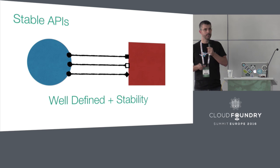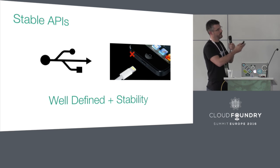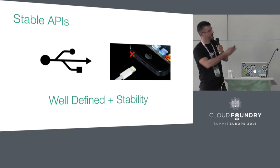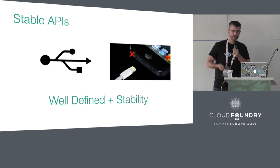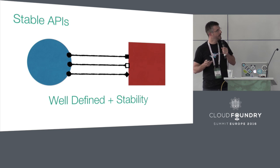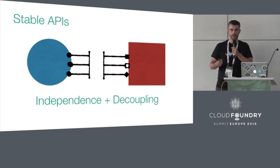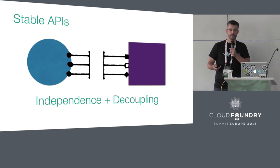Distributed systems also need stable APIs — well-defined APIs that are stable. An example of a good stable API is effectively like a USB; it's been around for ages. A bad API would be like the new iPhone headphone jack, which means you have to update your earphones and everything else. Stable APIs give each component the ability to be independent and decoupled, and that's really valuable because then you can plug and play those components — swap them out, replace them — and the system as a whole carries on working.